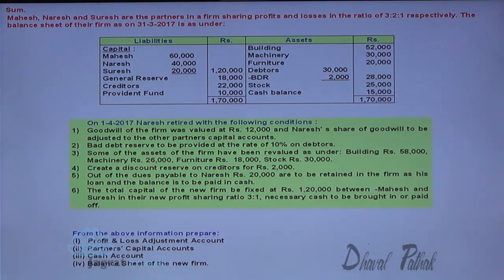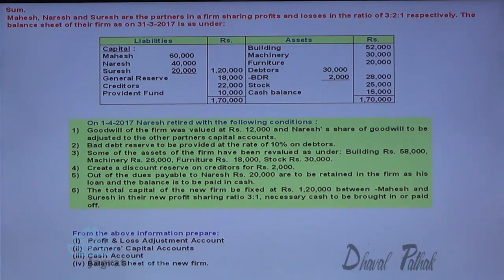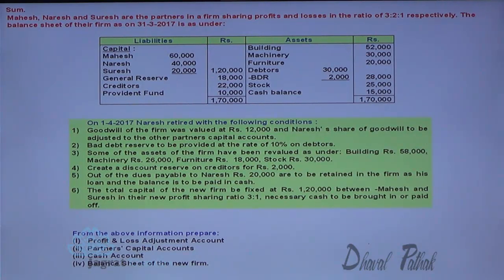The balance sheet of the firm as on 31st March 2017 is as under. On the assets side you are given: building, machinery, furniture, debtors, bad debt reserve, stock, cash balance. On the liabilities side: capital of Mahesh, Naresh and Suresh, general reserve (that is undistributed profit), creditors, and provident fund.